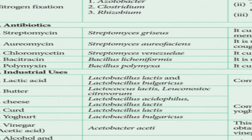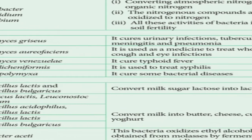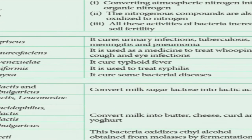Streptomycin is derived from the bacterium Streptomyces griseus. It cures urinary infection — if you have a urinary problem, this antibiotic can treat it. The antibiotic known as streptomycin is taken from this bacteria. It treats urinary infection, tuberculosis (TB), meningitis — which is brain fever — and pneumonia.